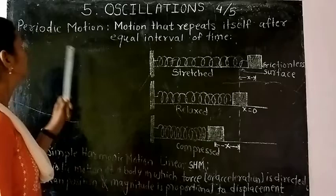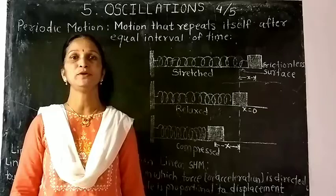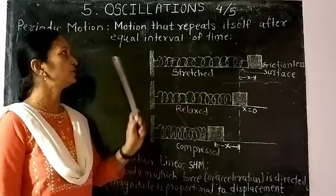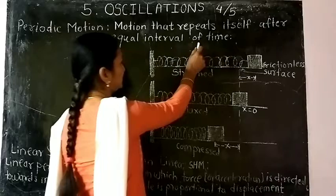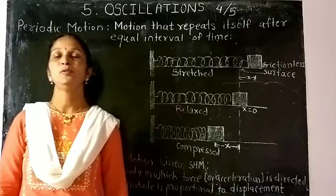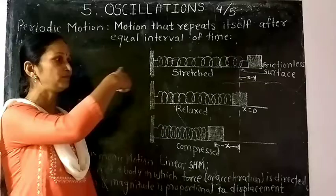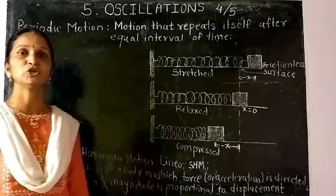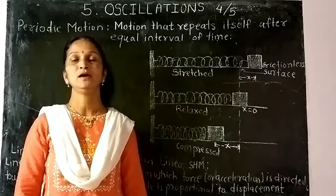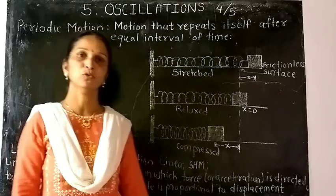Before that we will start with periodic motion. In day-to-day life we come across so many types of motion. The first one is periodic motion — motion that repeats itself after equal intervals of time. For example, the motion of the hands of a clock repeats after equal intervals of time. Another example is the motion of the moon around the Earth, which is also repeated after equal intervals of time. This is nothing but periodic motion.